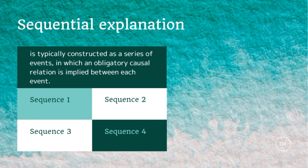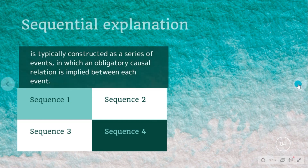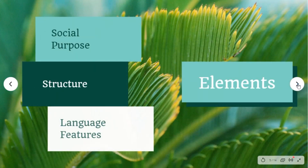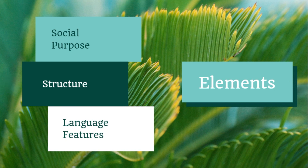As with other text types, explanation text will have three elements: social purpose, schematic structure, and the typical language features it is usually realized through.